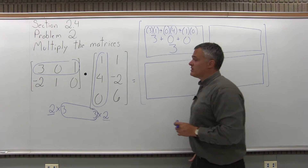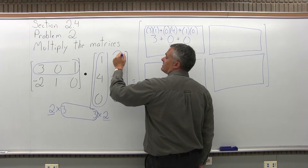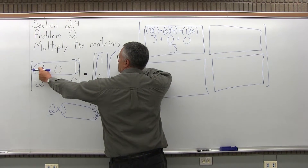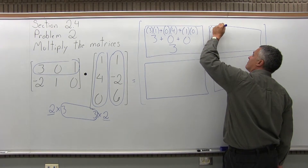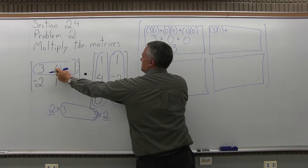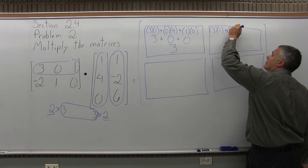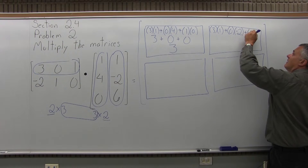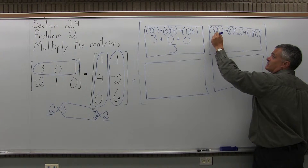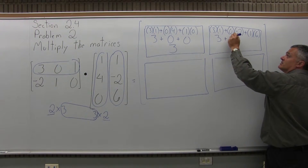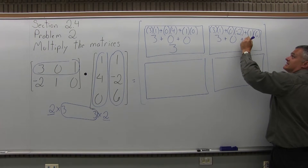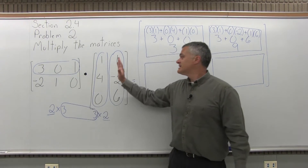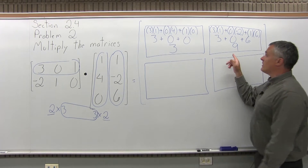For the next box, we're going to multiply the top row of the first matrix, 3, 0, 1, times the second column of the second matrix, which is 1, negative 2, 6. Multiplying first times first is 3 times 1, plus middle times middle is 0 times negative 2, plus last times last is 1 times 6. Working that out: 3 times 1 is 3, 0 times negative 2 is 0, and 1 times 6 is 6. Adding those values, 3 plus 0 plus 6 gives a result of 9. We multiplied the top row of the first matrix times the second column of the second matrix, and the answer goes in the top row and second column of our solution.